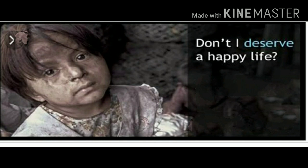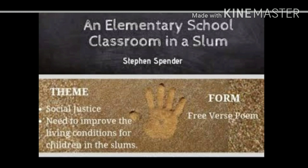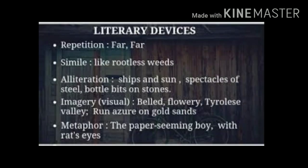So the poem ends here. We can see that through this poem the poet wants to grab everyone's attention to reform society and do something for the education of slum children. The poem 'An Elementary School Classroom in a Slum' by Stephen Spender is a free verse poem with no rhyming scheme. The theme is social injustice. Literary devices used include: repetition ('far far'), simile (children's faces compared to rootless weeds), alliteration ('ships and sons,' 'spectacle steals,' 'bottle bits'), and imagery — scenes created in the imagination, such as 'paper-seeming boy with rat's eyes.'